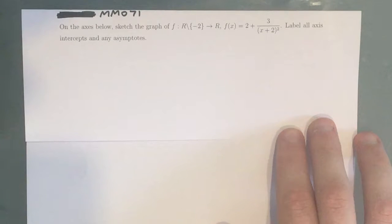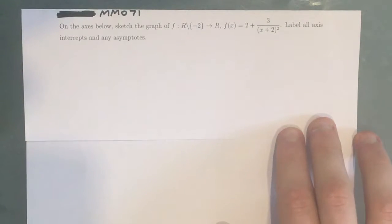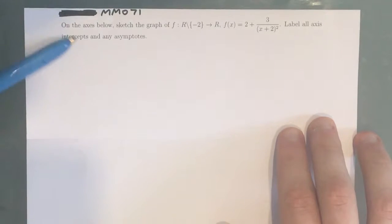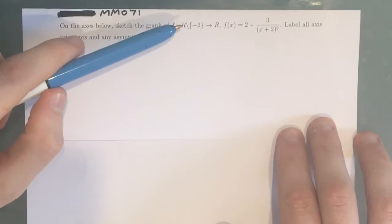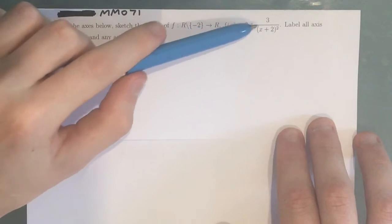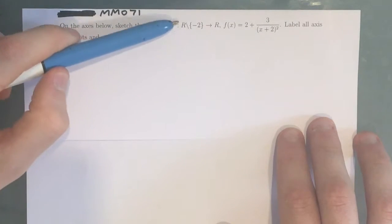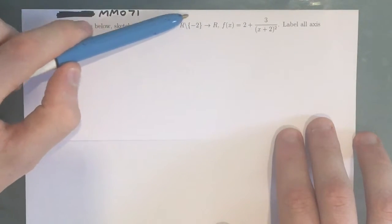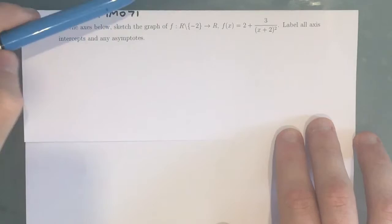Hey guys, this is question MM071 of the Maths Methods Sharpen Study Guide. We've got on the axes below, sketch the graph of f(x) equals 2 plus 3 over (x plus 2) squared, where the domain is all real numbers except for negative 2.